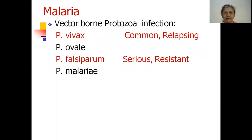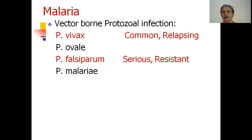Malaria is a vector-borne protozoal infection. Though there are various species across the globe, the common ones in India are Plasmodium vivax and Plasmodium falciparum. Amongst these two, Plasmodium falciparum can manifest as very serious infections where patients could worsen into even coma or unconsciousness, with even fatal outcomes. This is called cerebral malaria, characterized by loss of consciousness and convulsions. Plasmodium falciparum has also developed resistance to the primary drug chloroquine.